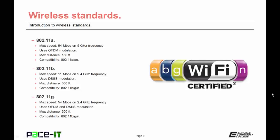Now let's move on to 802.11g. It has a maximum speed of 54 Mbps and also operates on the 2.4 GHz frequency band. 802.11g can use both OFDM and DSSS for its modulation techniques. It has a maximum distance of 300 feet and is compatible with 802.11b and 802.11n.